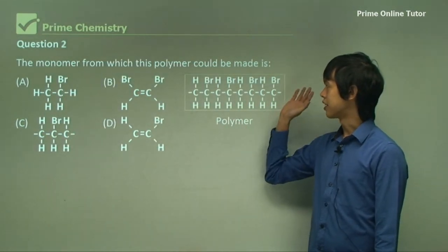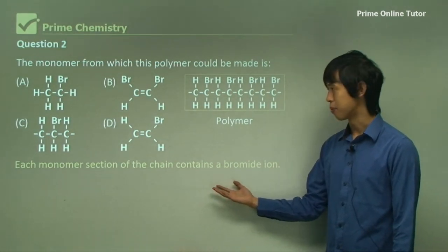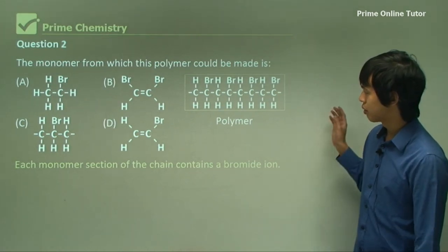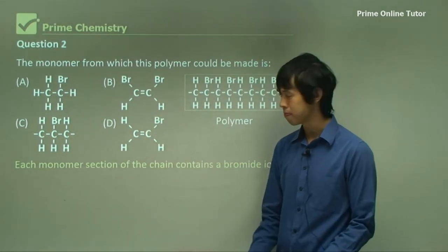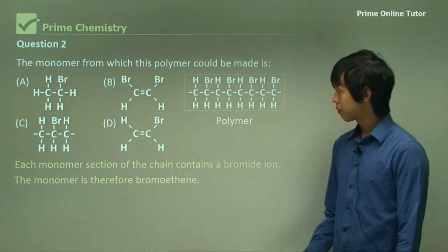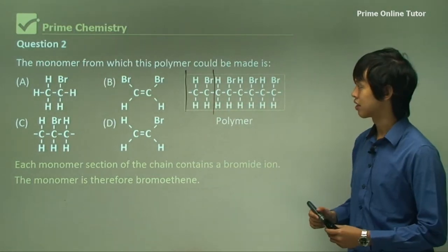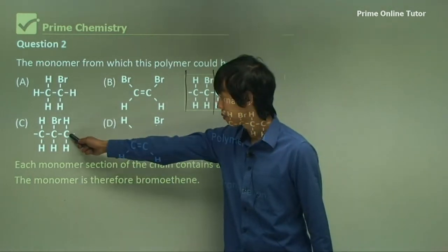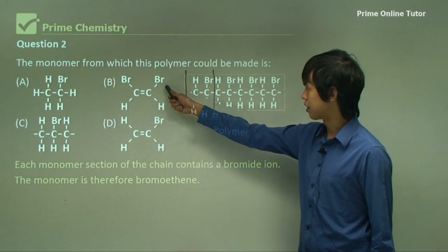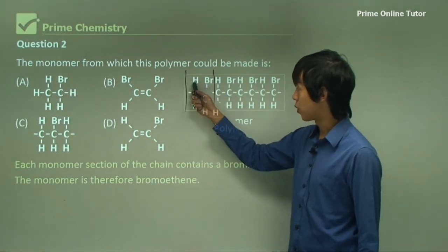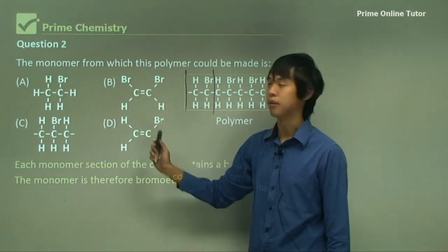Next question: which is the monomer from which this polymer is made? The polymer contains a bromide group in each repeating unit, so all options have bromide. The repeating unit has only two carbons, so the three-carbon option is eliminated. The monomer must be unsaturated — no saturated options. And it has only one bromide per base monomer unit, so the option with two bromides per unit is eliminated. The answer is D — bromoethene.